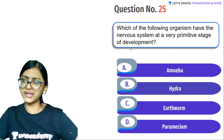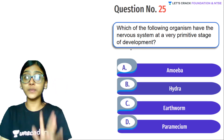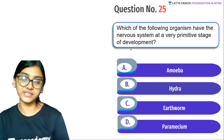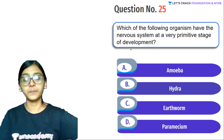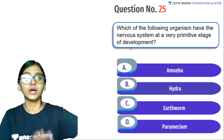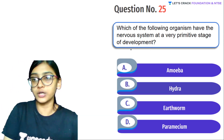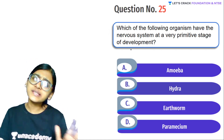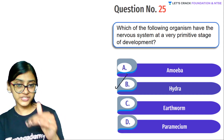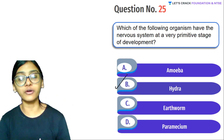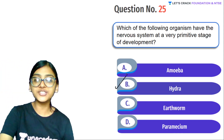Next question: Which of the following organisms has the nervous system at a very primitive stage? Options: amoeba, hydra, earthworm, paramecium. Amoeba and paramecium are unicellular — they won't have a primitive nervous system. Porifera before hydra don't have tissue, just cells. Hydra has tissue level of body organization — they do have a very primitive nervous system. So the answer is B — hydra.